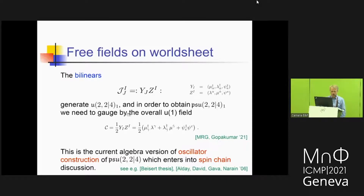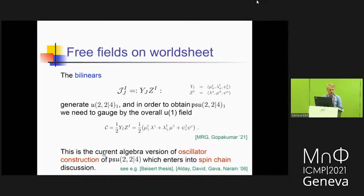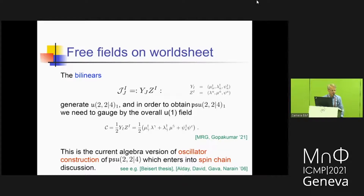How do you get to PSU(2,2|4)? You look at the bilinears — take one generator from the y's and one from the z's — and check that they generate U(2,2|4) at level 1. To obtain PSU(2,2|4) you divide out by some overall U(1) field. This is a construction we checked from first principles, but in fact it's very familiar in the spin chain community for the description of N=4 super-Yang-Mills — it's the oscillator construction of PSU(2,2|4) used in that context. While the oscillator construction would give the global algebra, here we get the affine algebra. So this is the affinization of the oscillator construction familiar in the spin chain community.